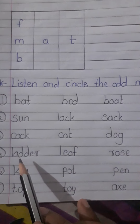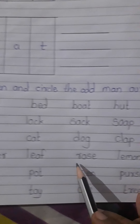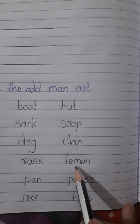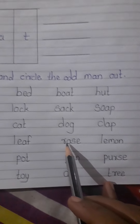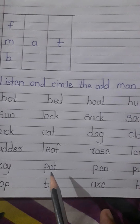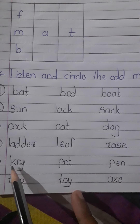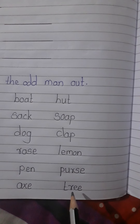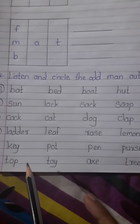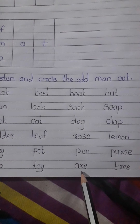L-A-D-D-E-R ladder, L-E-A-F leaf, R-O-A-D-S roads, L-E-M-O-N lemon. Which one is odd? Very good — R-O-A-D-S roads, so circle roads. Next: K-E-Y key, P-O-T pot, P-E-N pen, P-U-R-S-E purse. Which one is odd? K-E-Y key — very good! Next: T-O-P top, T-O-Y toy, A-X-E axe, T-R-E-E tree. Which one is odd? All start with T except A, so axe is odd — you can circle the axe.